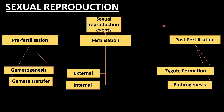Sexual reproduction is mainly biparental, involving fusion and formation of gametes. It involves both mitosis and meiosis. There are three types of events in sexual reproduction: pre-fertilization events (gametogenesis and gamete transfer), fertilization events (external and internal fertilization), and post-fertilization events (zygote formation and embryogenesis).